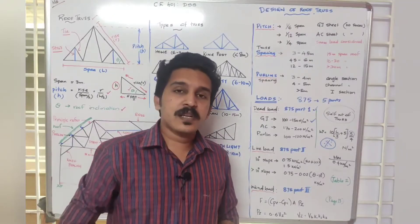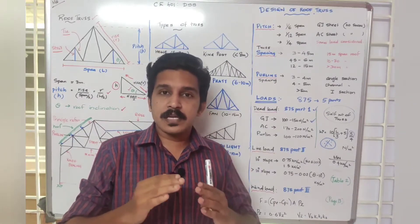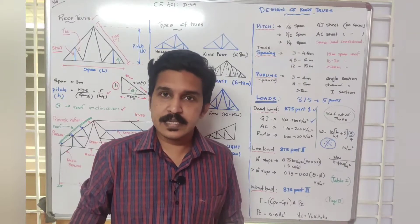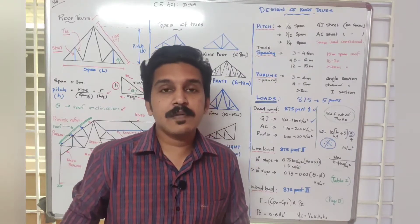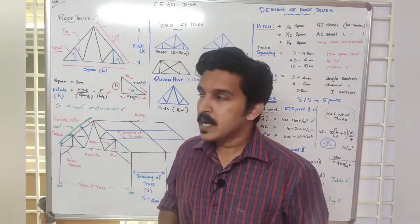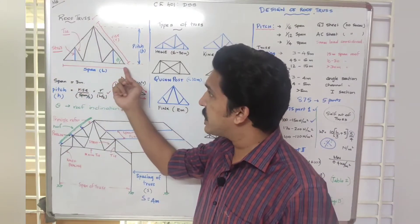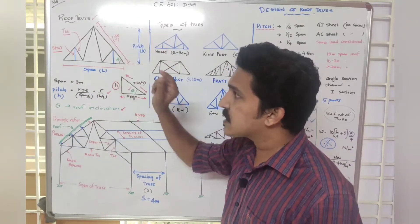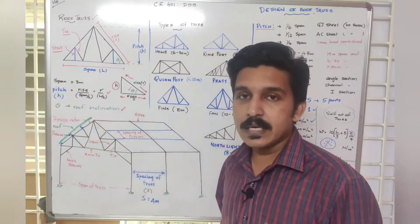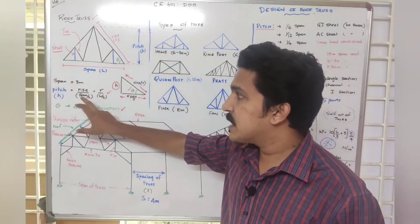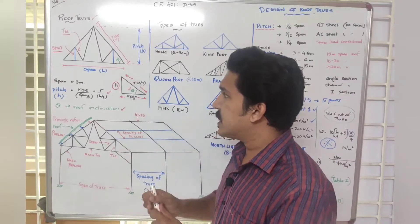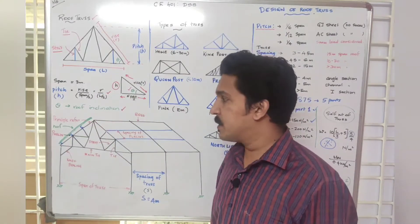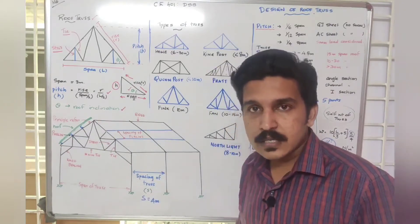The roof truss and its parts include tension and compression members. The components of the roof truss depend on the span of the roof. The pitch of the truss is defined as the rise divided by the span divided by two, or simply rise over half-span.